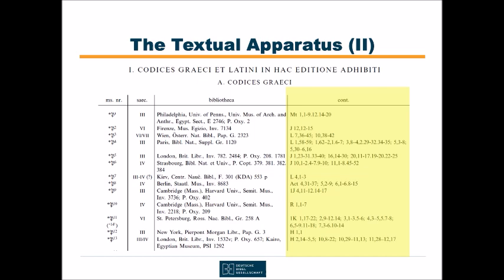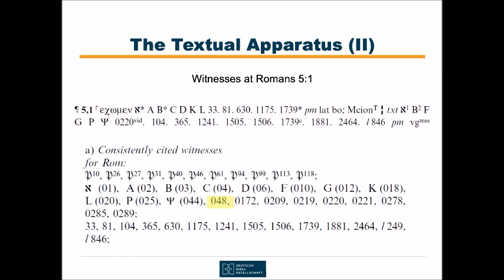Where we have a positive apparatus, it is pretty easy: we can expect all consistently cited witnesses to be listed in the apparatus, provided they are extant and legible at a given place. If we go back to the apparatus unit in Romans 5 verse 1 and compare the witnesses presented there with the list of consistently cited witnesses from the introduction, we immediately see that many are missing in the apparatus. The reason is simple — they aren't extant for Romans 5 verse 1. This is true for all papyri, but also for example for the uncial 048, which, as instructed by appendix 1, has no text in Romans 5.